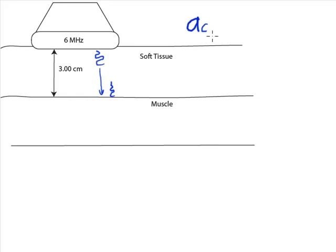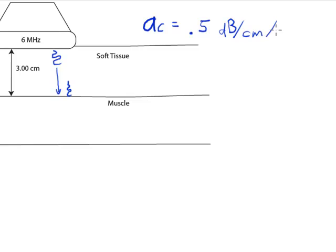Let's take a look at soft tissue to get started with. The attenuation for soft tissue is given as 0.5 dB per cm per MHz. The attenuation depends not only on the distance it travels, but also depends on the frequency of the transducer.